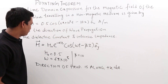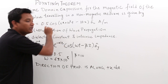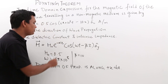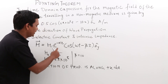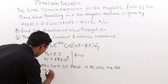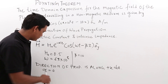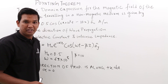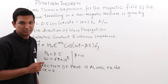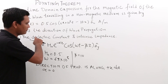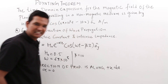One more finding from the comparison: the standard equation has e^(-αz), but the given field does not have such a term. This is only possible when α = 0, because e^0 = 1. Alpha is 0 only in a lossless medium, as we have seen in previous videos. So we are talking about a lossless medium, and the wave is propagating along the plus x direction.